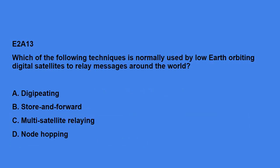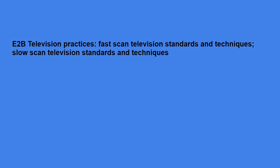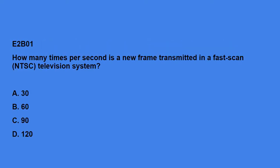E2A13: Which of the following techniques is usually used by low-earth orbiting digital satellites to relay messages around the world? The answer is: store and forward. E2B01: How many times per second is a new frame transmitted in a fast scan NTSC television system? The answer is 30 times.